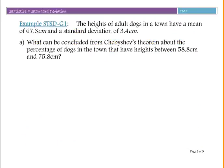Let's look at an example. The heights of adult dogs in a town have a mean of 67.3 cm and a standard deviation of 3.4 cm. What can be concluded from Chebyshev's Theorem about the percentage of dogs in town that have heights between 58.8 cm and 75.8 cm?